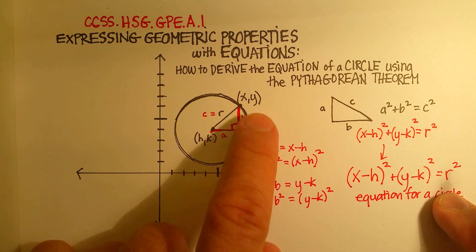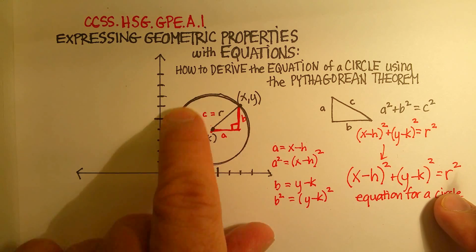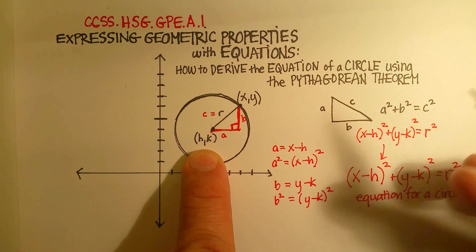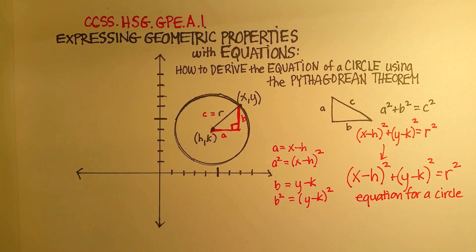So from this equation, you'll be able to draw any circle if you're given this point or one of these points here. I hope that was helpful.